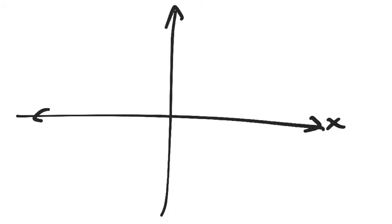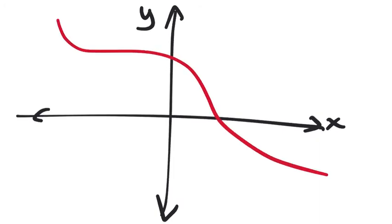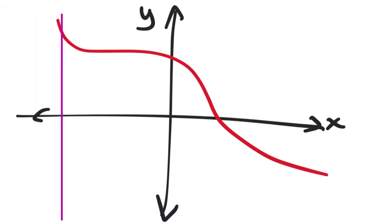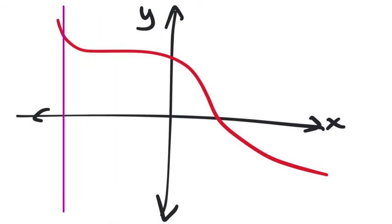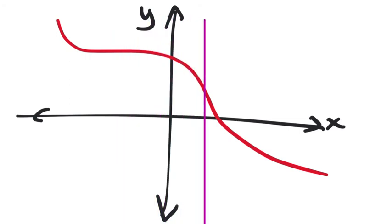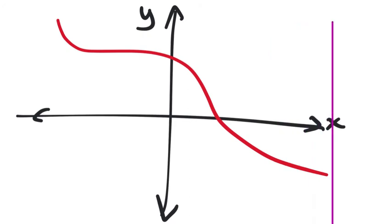On a graph, you can tell if it's a function very quickly using the vertical line test. Take a vertical line and scan it across the graph from left to right. If the vertical line ever goes through the curve more than once at any position, it's not a function. For this first graph, the vertical line only crosses once throughout, so this is a function.